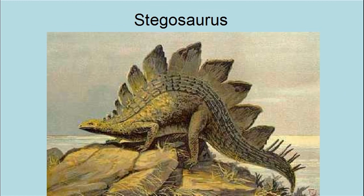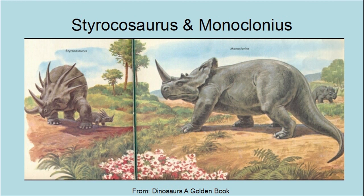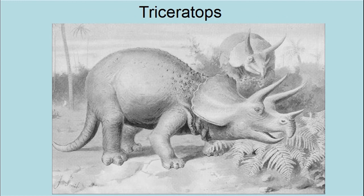This picture shows Stegosaurus. This image shows both a Corythosaurus and Trachodon — it is possible that these are varieties of the same kind of animal. This picture shows a Styrachosaurus on the left, and on the right we have Monoclonius. Note the single horn — could these be the unicorns mentioned in the Bible? This dinosaur is known as Triceratops. Monoclonius and Triceratops are probably varieties of the same kind of animal.